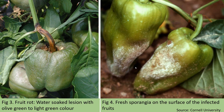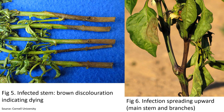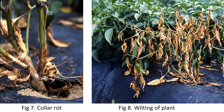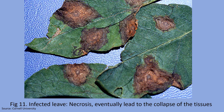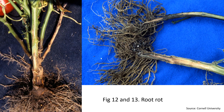Figure 3 shows fruit rot, where the lesion appears water-soaked with an olive green to light green color. Figure 4 shows fresh sporangia on the surface of infected fruits. Figure 5 shows the infected stem with brown discoloration indicating that it is dying. Figure 6 shows the infection spreading upward through the main stem and branches. Figure 7 shows collar rot. Figure 8 shows wilting of the plant. Figure 9 illustrates an infected leaf where the lesion is light green or gray-green in color. Figure 10 illustrates an infected leaf which is turning brown or scalded. Figure 11 depicts infected leaves in the later stage where necrosis has occurred, eventually leading to collapse of tissue. Figures 12 and 13 show root rot.